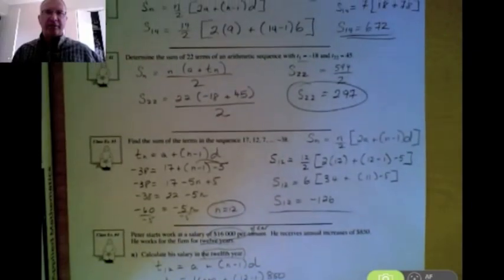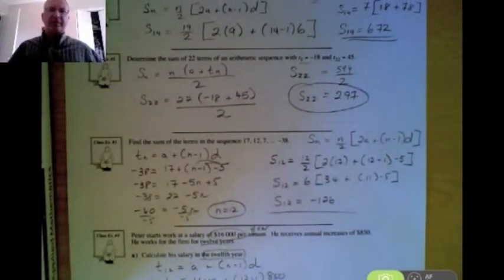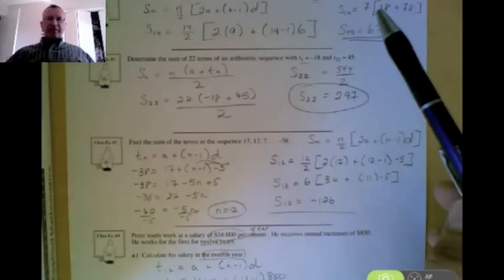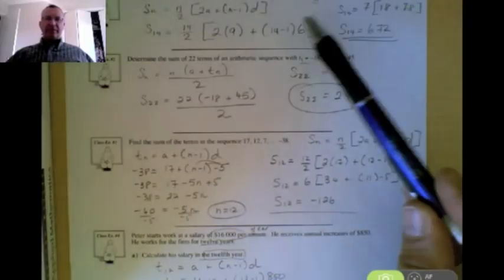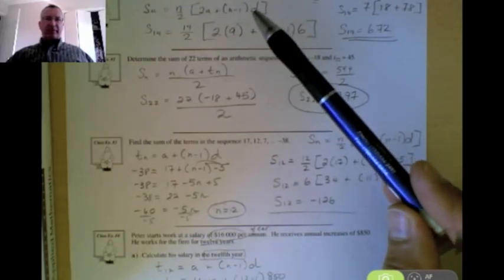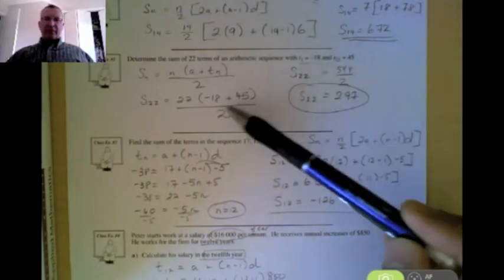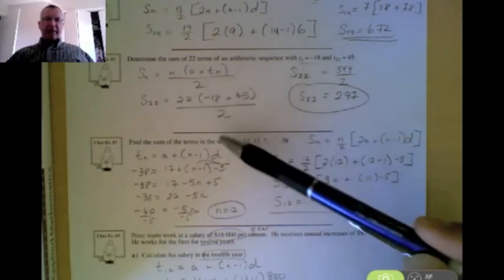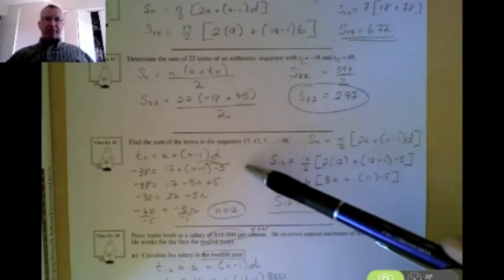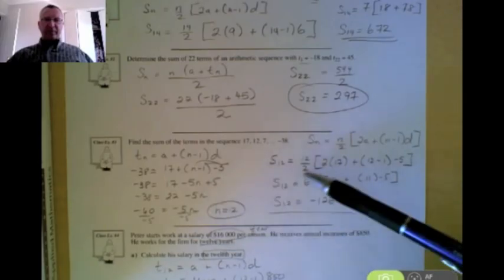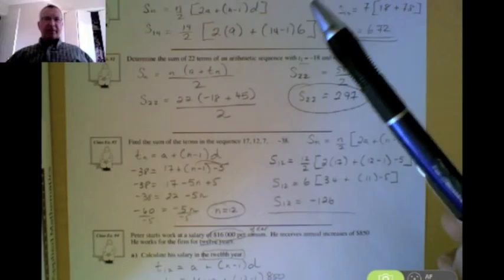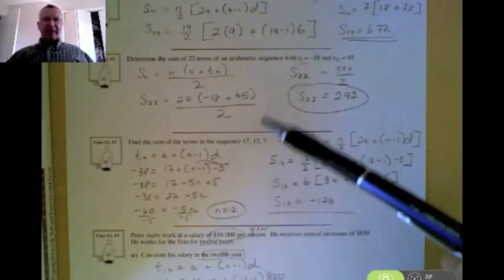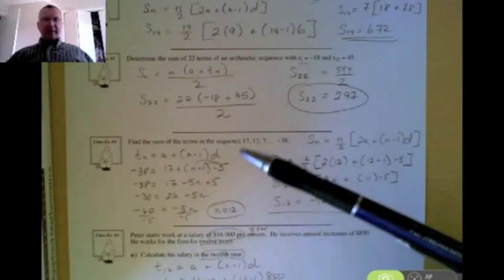So there's some examples of how to do the sum of an arithmetic series. Remember, the first example is where you know the number of terms, but you don't know the last term. So we use our first formula. If you know the first and the last term, you can use this second formula. And if you don't know the number of terms, you're going to have to find the number of terms first before you go ahead and find the sum. When you're working on your assignment, it's good to look back at these examples to help you out in case you've forgotten how to find the particular sum.